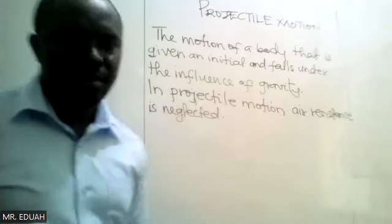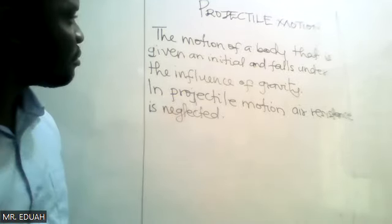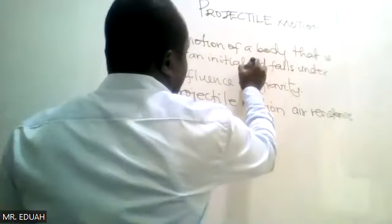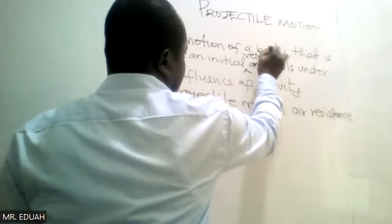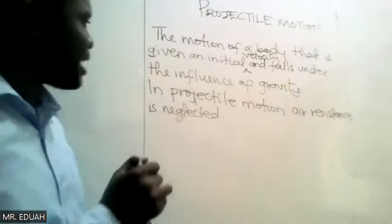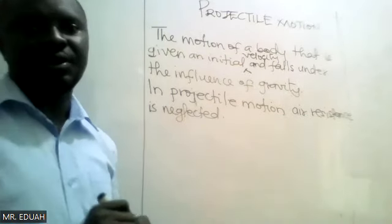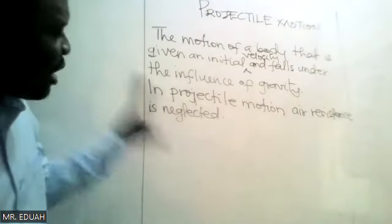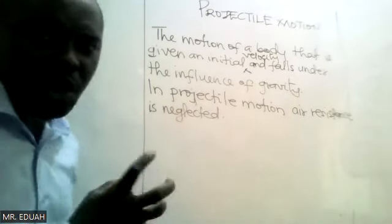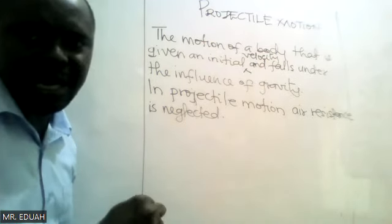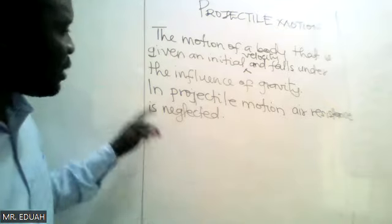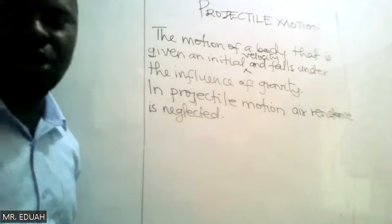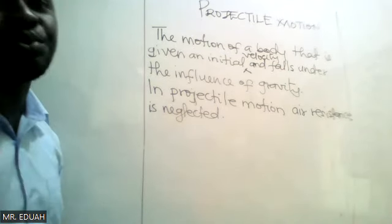In the definition of a body that is given an initial velocity and falls under the influence of gravity - applications. One important consideration or assumption applied under projectile motion is that we assume air resistance is neglected, because air resistance affects projectile motion, so we neglect it.